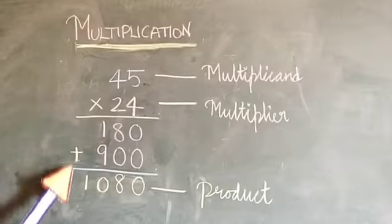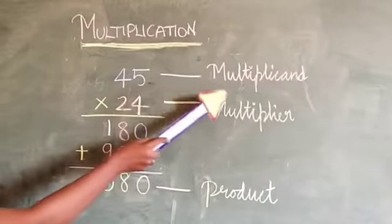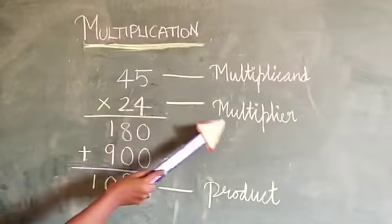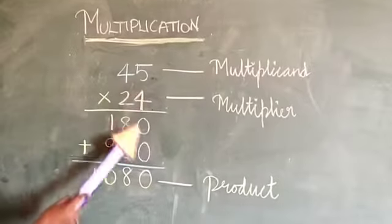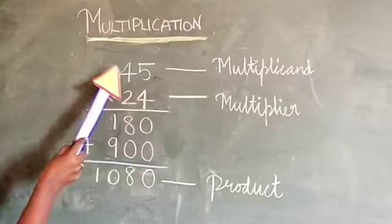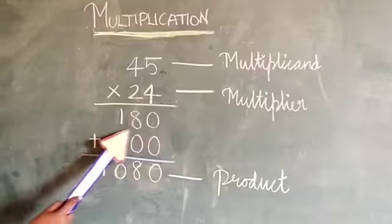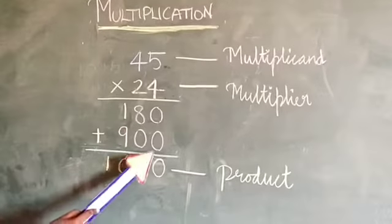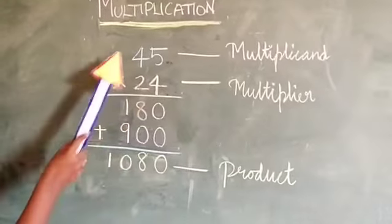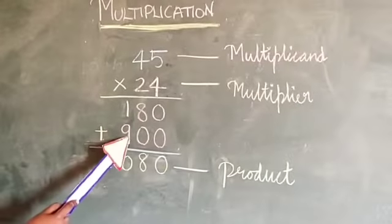Let us see the sums in detail. 45 is the multiplicand, 24 is the multiplier. 4 times 5 is 20, so 0, carry 2. 4 times 4 is 16 plus 2 is 18. 2 times 5 is 10, carry 1. 2 times 4 is 8, so 1 plus 8 is 9.